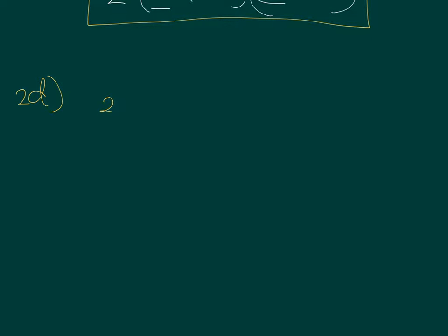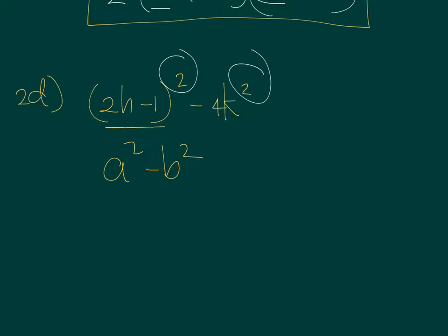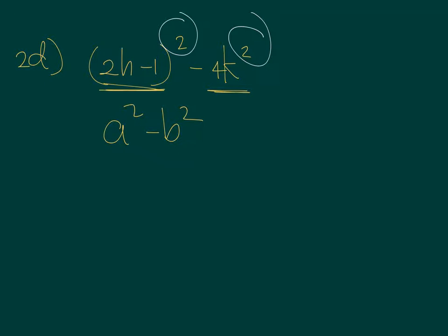In number 2D, you have 2H minus 1 squared minus 4K squared. So the existence of the squares here already signals that this somehow follows the form A squared minus B squared, except that it's not as simple as A and B. What we have is a 2H minus 1 and a 4K squared. So how do we factor this out?